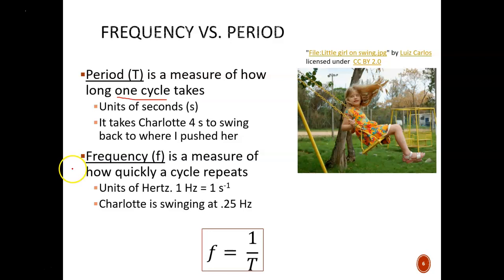Frequency is the inverse of period. If you know the period, then you simply do one divided by the period to get the frequency. Its units are hertz, abbreviated Hz. One hertz equals one second to the negative one power.